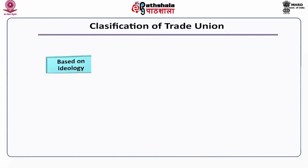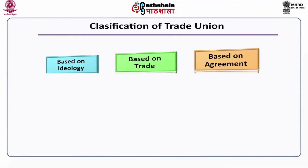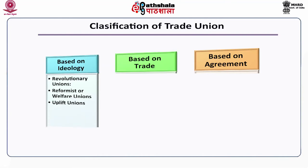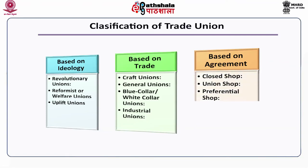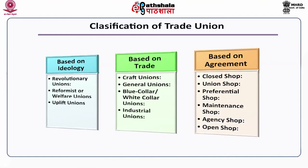Classification of trade unions. Trade unions are classified on the basis of three broader phenomena: one is ideology, another is trade, and third is agreement. On the basis of ideology, we have three kinds: revolutionary unions, reformist or welfare unions, and uplift unions. On the basis of trade, they are classified into four kinds: craft unions, general unions, blue collar or white collar unions, and industrial unions. On the basis of agreement, we have closed shop, union shop, preferential shop, maintenance shop, agency shop, and open shop.